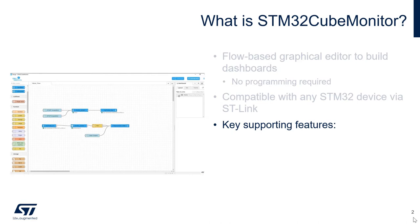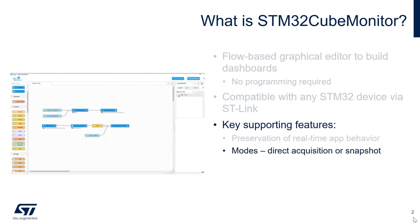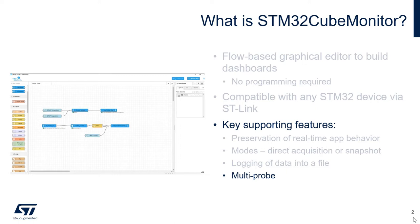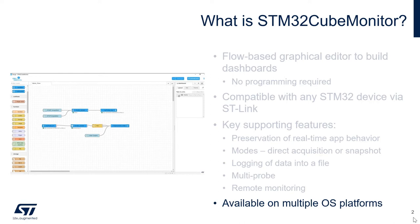Some key features of the STM32 Cube Monitor include: reading and writing variables on the fly from and to RAM in real-time while the target application is running; support of two modes — direct acquisition or snapshot; enables the logging of data into a file and replay for exhaustive analysis; multi-probe support to monitor multiple targets simultaneously; and remote monitoring with native support for multi-format displays such as PCs, tablets, and mobile phones. Like many of our other tools, the STM32 Cube Monitor is compatible over a range of OS platforms including Windows, Linux, Ubuntu, and macOS.